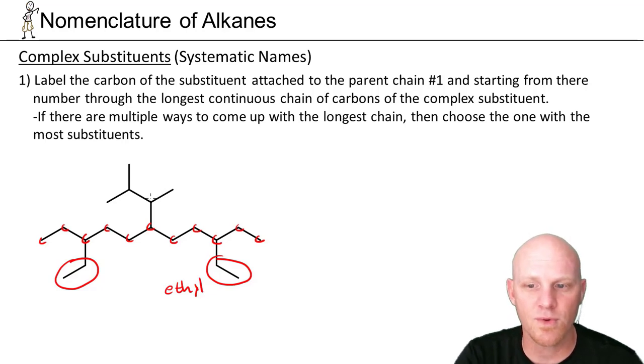And rule number 1 is to label the carbon directly attached to the parent chain, this guy, as carbon number 1. And starting from there, number through to the longest continuous chain you can find. So if he's number 1, going off to the left rather than right will get me a longer chain.